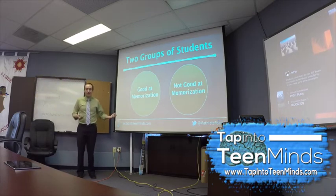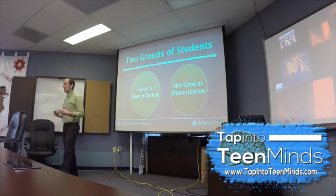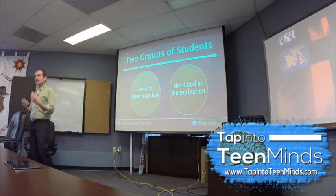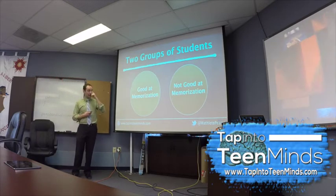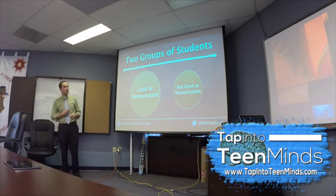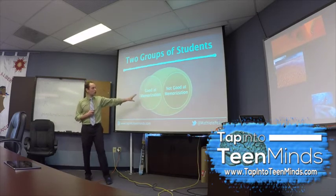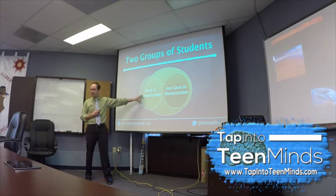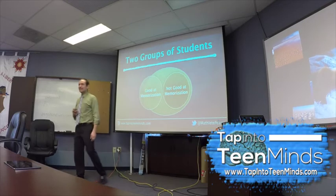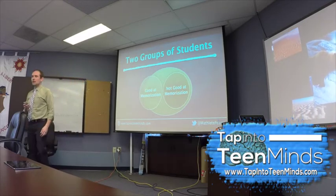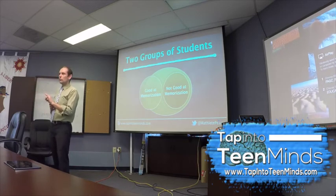I was thinking, either some people will be good at math and some people won't, or maybe I need to start rethinking how I do things. So that's the approach I tried to take. And the part that really concerned me most is that the students who were not good at math and a good chunk of my students who were good at math had something in common. Does anyone want to take a stab at what that might be?